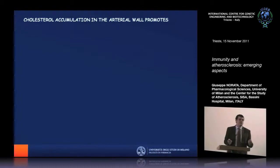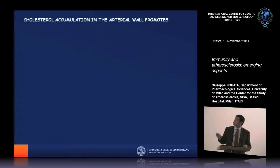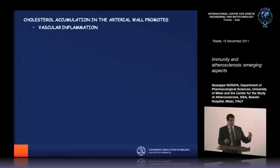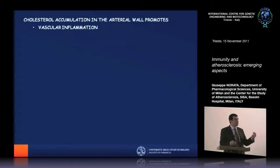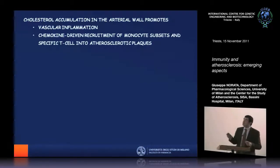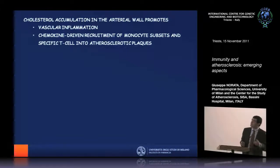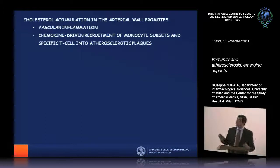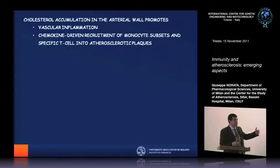A key player in this disease is cholesterol. Cholesterol accumulates in the arterial wall, first inducing vascular inflammation — meaning we activate the immune response within the arterial wall. This leads to the recruitment of monocyte subsets and specific T cells within the atherosclerotic plaque, driven by the secretion of specific chemokines, first by endothelial cells and then by monocytes accumulating within the arterial wall.